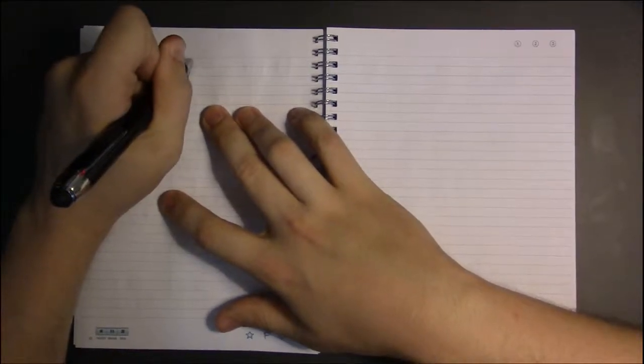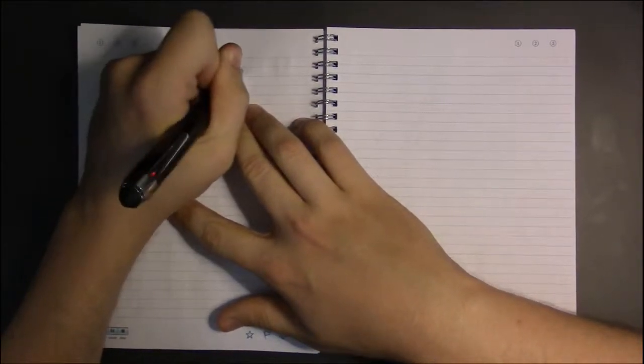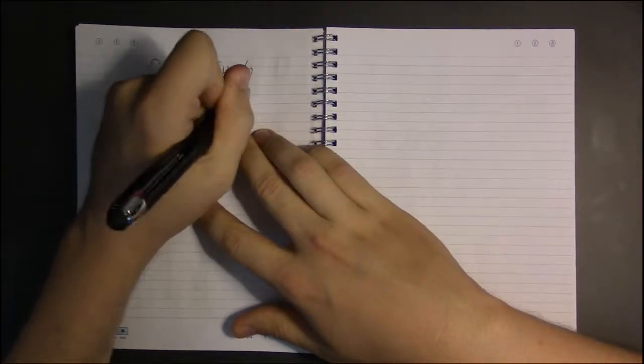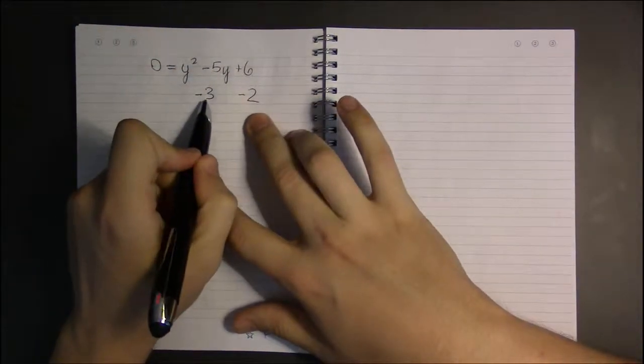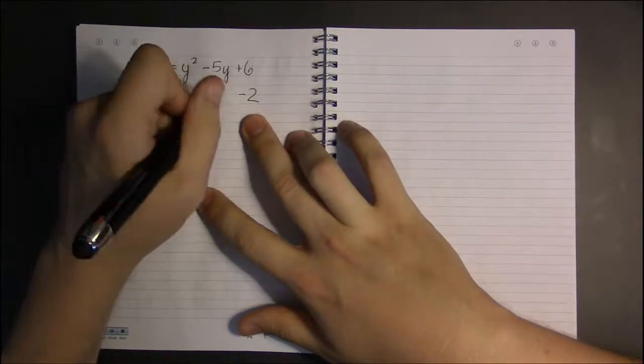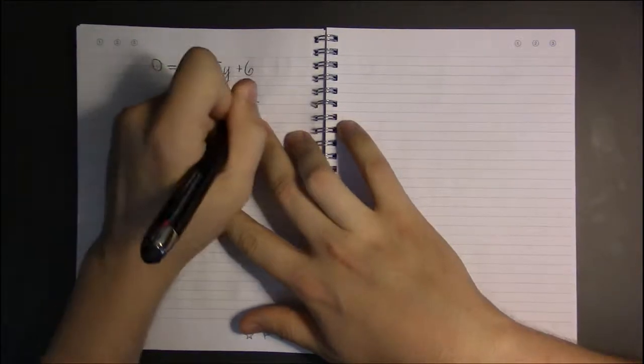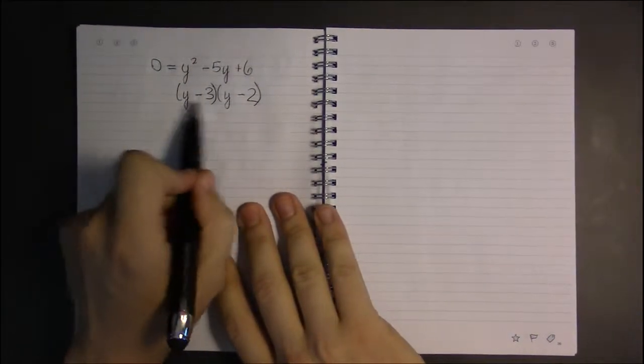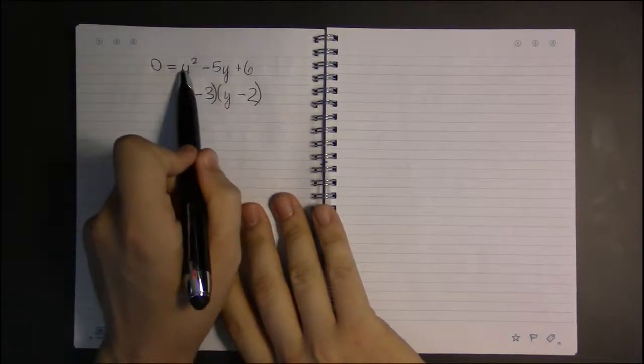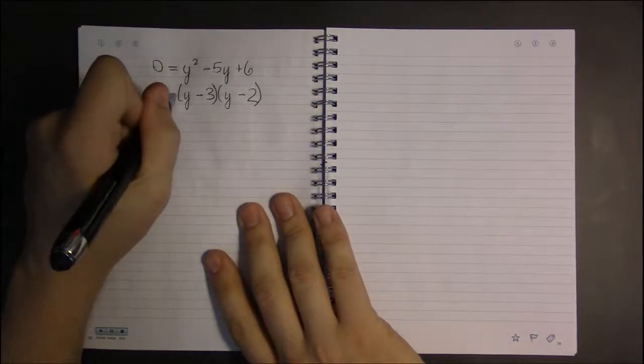Two numbers that multiply to a plus 6 and add to a minus 5 are going to be minus 3 and minus 2. When we multiply them together, we're going to get 6, and when we add these two together, we'll get negative 5. So this will factor as follows. And if you FOIL or distribute this out, you'll see that once you distribute this, you get back to exactly this. So these two things are indeed the same.